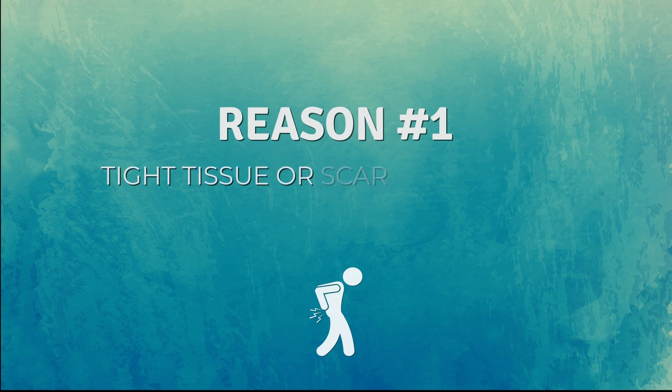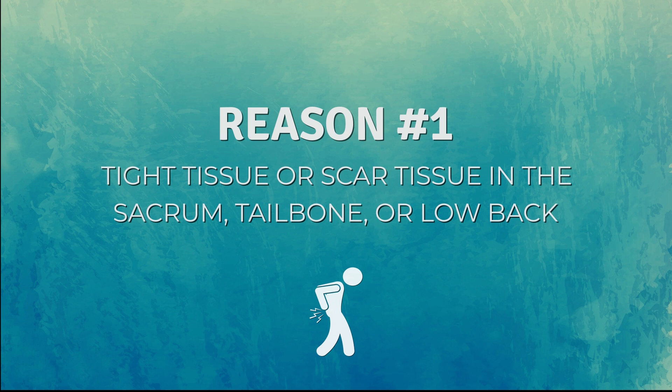Reason number one: if you've ever fallen on your tailbone, had low back surgery, or have a really tight lower back with tight QL muscles — if there is density, scar tissue, or shortened tight tissues in the sacrum, tailbone, or low back region — those tissues will be too dense and short to allow the lower abdominals to contract. This is due to an anatomical law called reciprocal inhibition: in order for the lower abdominals to contract, the low back muscles have to stretch.